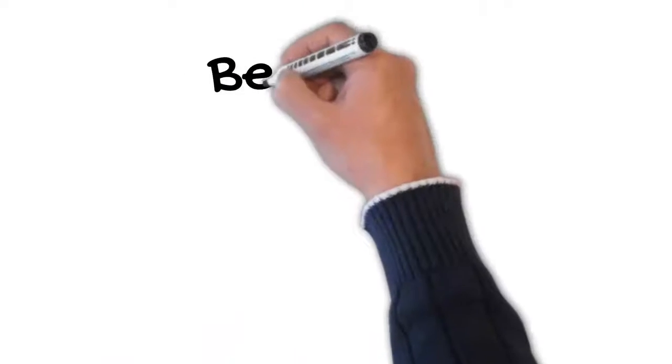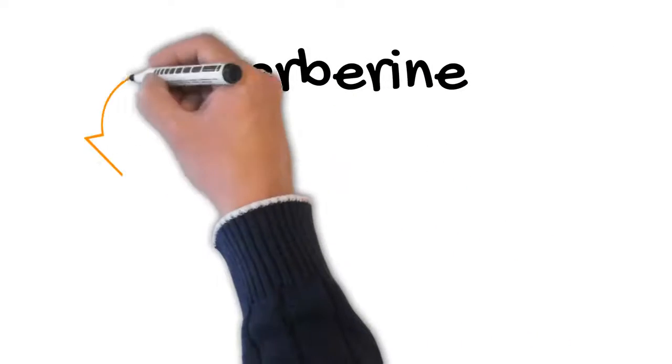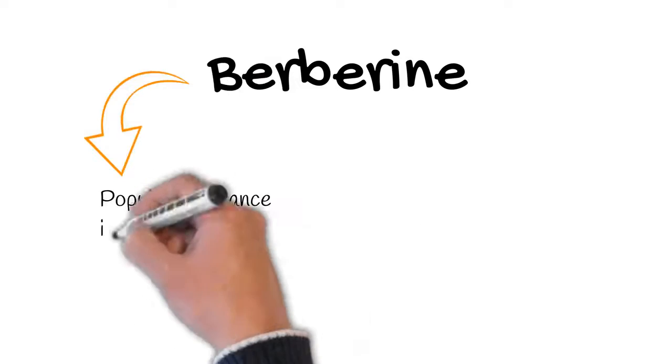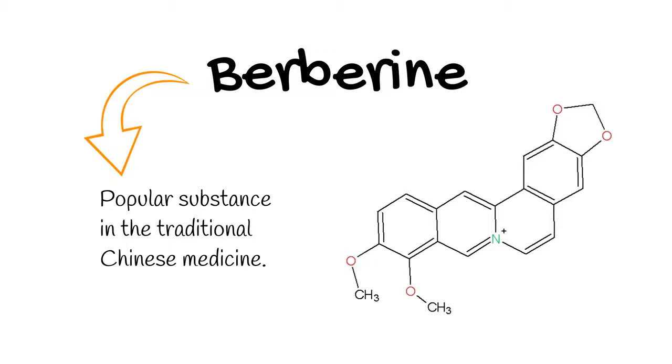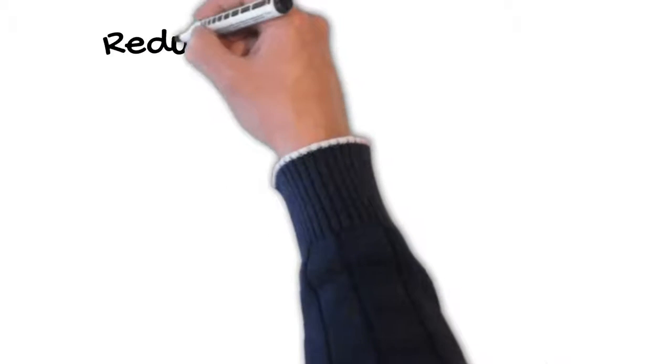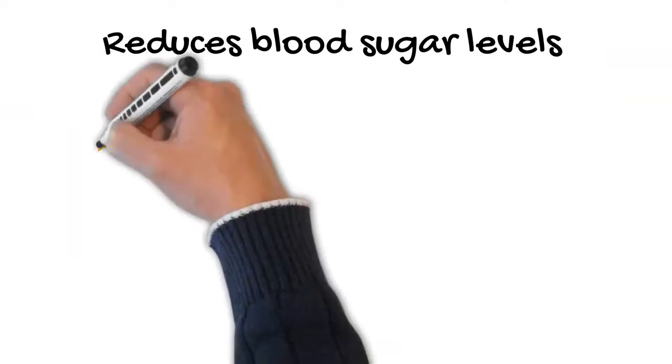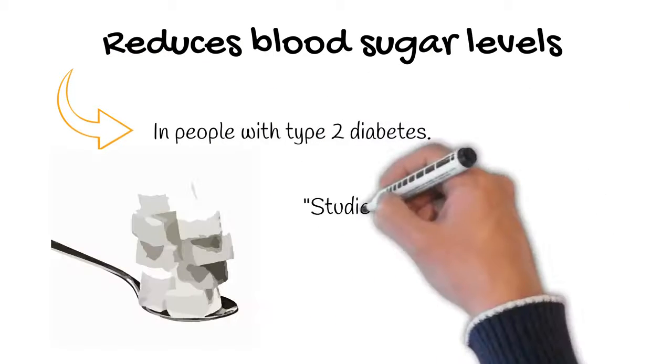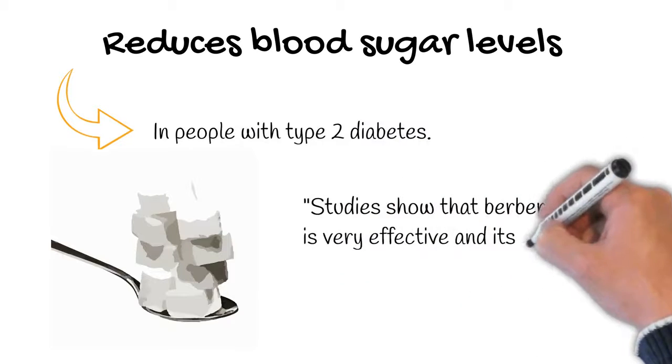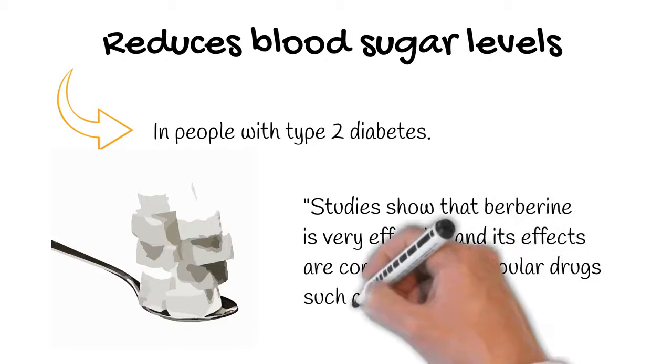Berberine has been a very popular substance in traditional Chinese medicine. It has been traditionally used to treat different diseases, but nowadays, after a lot of studies have been done, berberine is used for a variety of different reasons. For example, berberine can reduce blood sugar in people with type 2 diabetes. Now many studies show that berberine is very effective and its effects are comparable to popular drugs such as metformin.